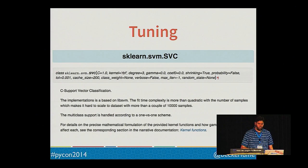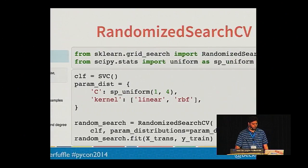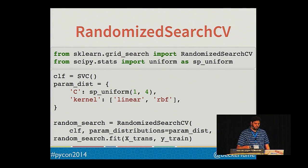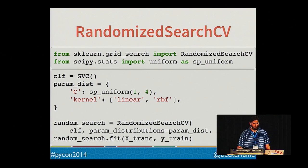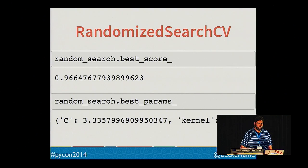One last tip before I move on: scikit-learn comes with a ton of algorithms built in, many with multiple parameters you can tweak. It can be daunting to figure out which algorithm to use and what values to pick. Luckily, there are many tools built into scikit-learn to help you tune your model. I recommend randomized search CV — you give it a range of values to try for each parameter, it randomly chooses some and tests them. Once the search is complete, you can get the highest-scoring classifier along with its score and parameters, and easily run this across multiple algorithms.